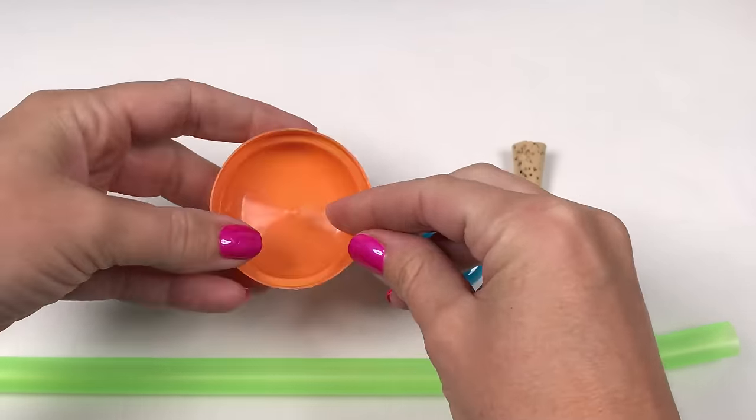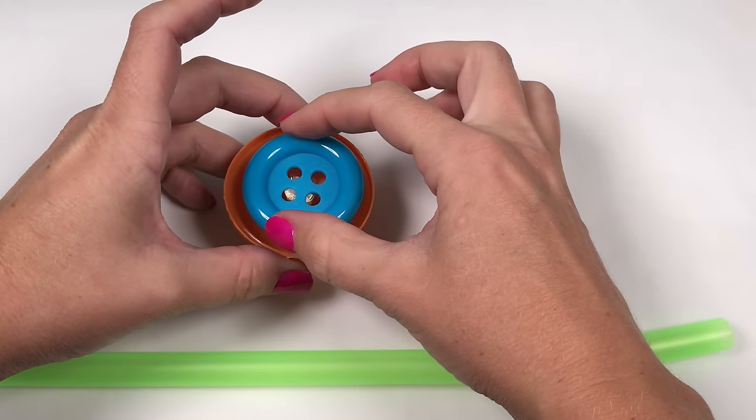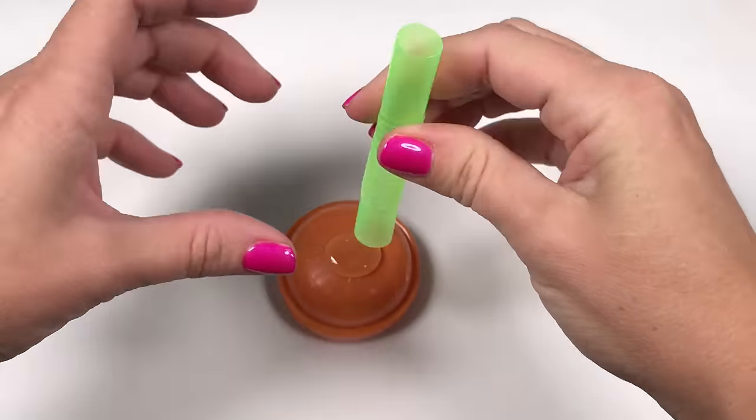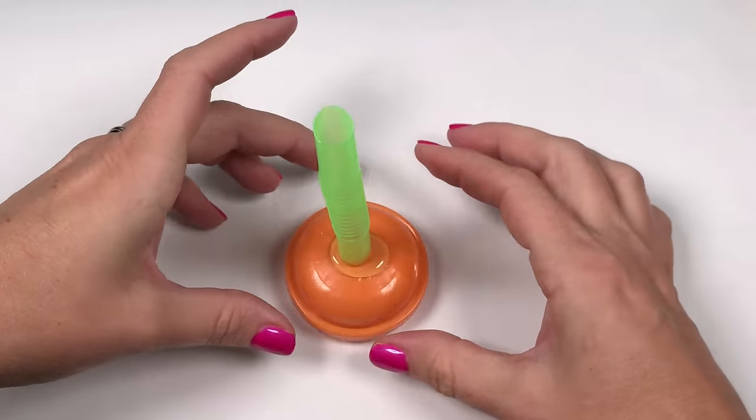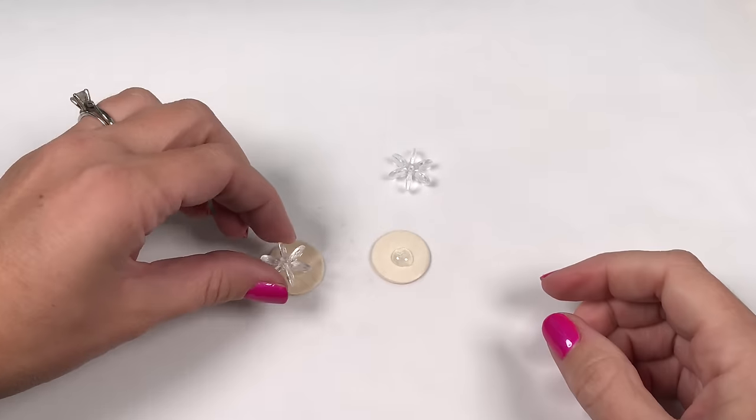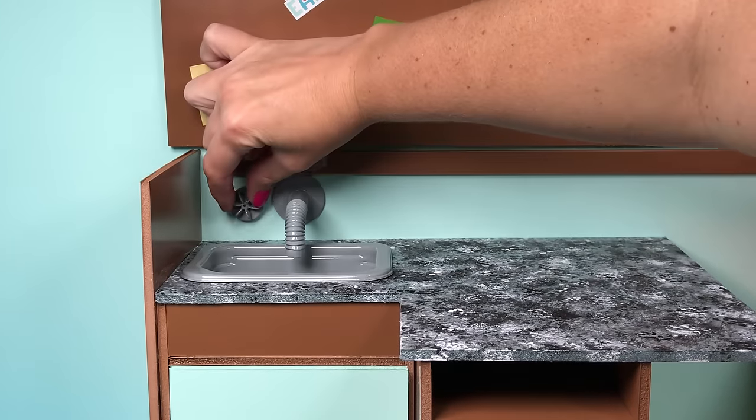For the shower head, I'm gluing together a few odds and ends and attaching it to a jumbo straw. For the water knobs, I'm gluing buttons to beads and I'm spray painting everything silver.